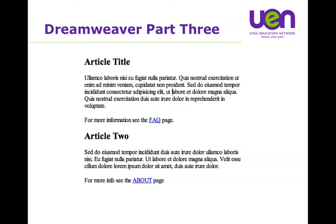HTML was meant to identify what the title was, so it had heading tags - I've used the H1 tag for the article title. It was meant to make paragraphs with just the P tag. Another thing it was meant to do was to make links, so you can see the blue underlined text there - that's the Hypertext part, where that text could become a link. When I clicked on it, I could jump to another part of the document or to another page of HTML.